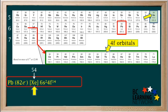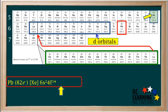We've now accounted for 54 plus 2 plus 14, which is a total of 70 electrons. After the 4f's are filled up, we proceed to the d orbitals. Remember the d orbitals are always one less than the period number, so the d orbitals in period 6 are the 5d's.